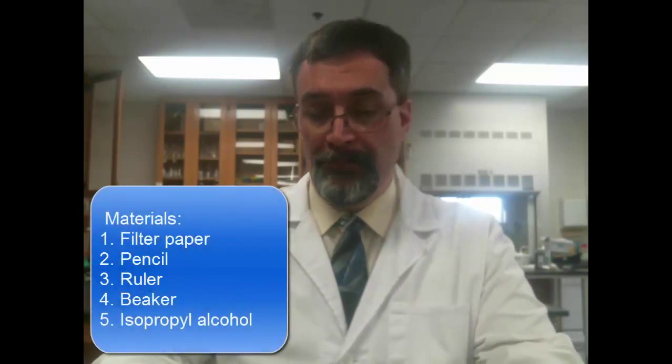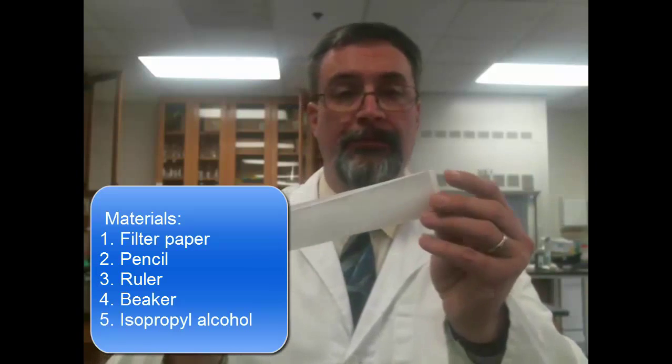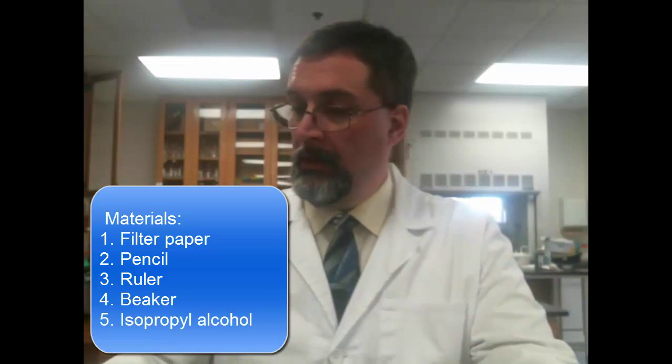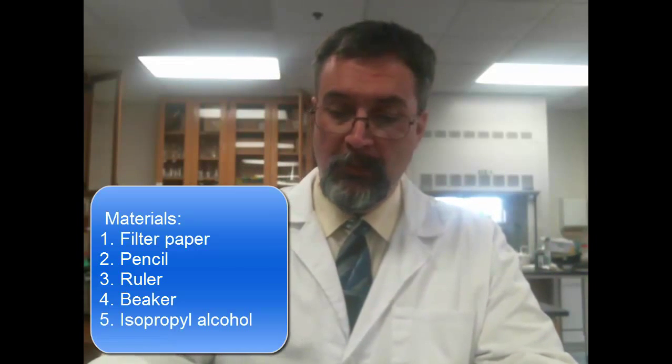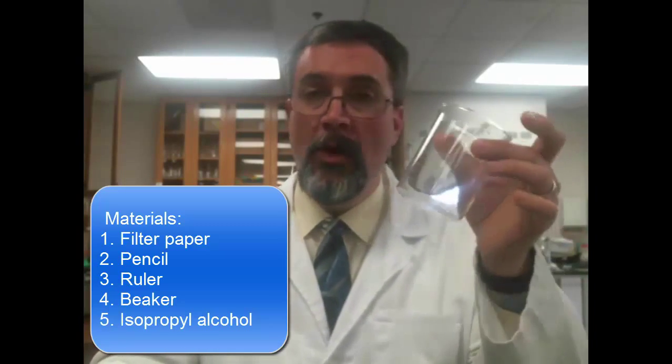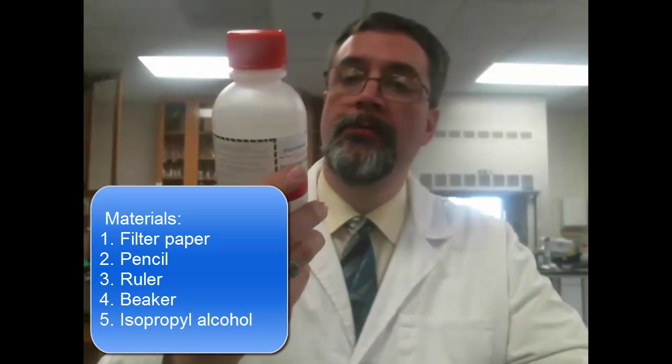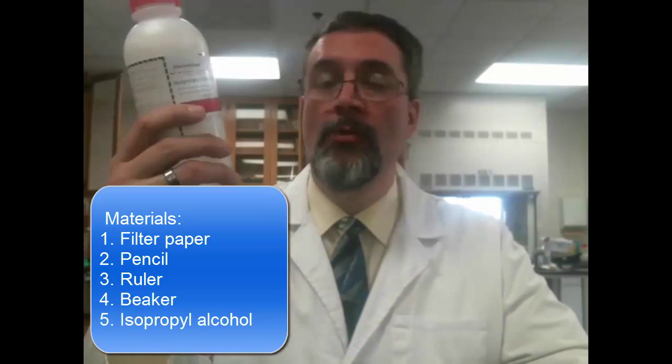The process of paper chromatography is a fairly simple one, but it's very important that you take care of your results. We don't want any ambiguity when it comes to matching up this ink. You're going to need the following pieces of equipment: a strip of filter paper, this is nothing more than just a very porous paper, you'll need a pencil, you'll need a ruler, a small beaker, and you're going to use some isopropyl alcohol, that's just rubbing alcohol.